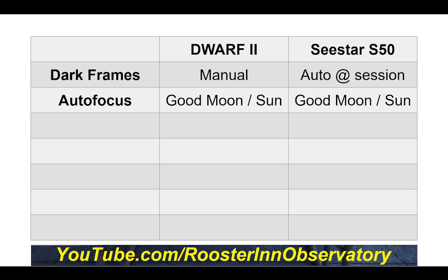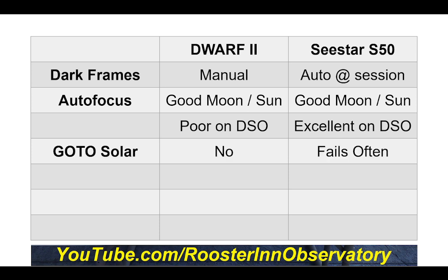Autofocus: the Dwarf 2 has very fast, effective autofocus for the Moon and the Sun, though for deep sky objects in the current software it will overshoot and leave you having to focus manually. The Sea Star's autofocus is almost an order of magnitude slower, but it does an excellent job on deep sky objects. Both have struggled finding the Sun — the Sea Star goes straight through it and reports failure, while the Dwarf's two-camera system lets me find the Sun on the wide camera first and go to it.